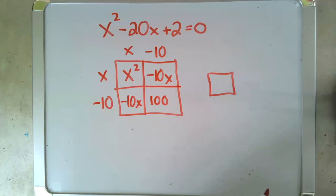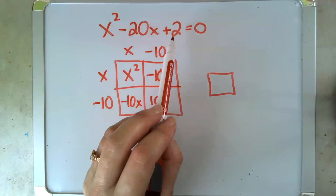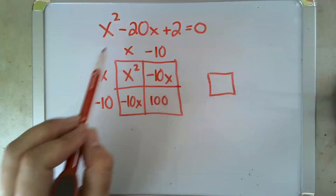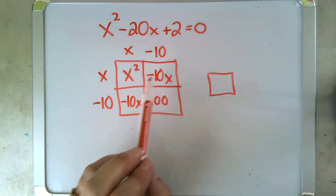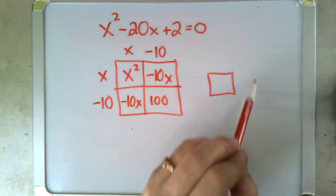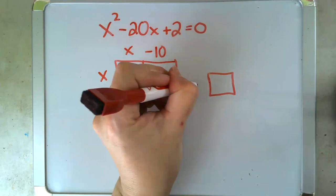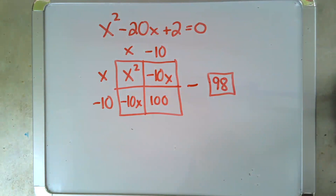But we've now changed our equation, right? We started with x squared minus 20x plus 2. When we completed the square, we ended up with x squared minus 20x plus 100. We use this to get back to 2. So how do we turn 100 into 2? That's right. We subtract 98 from it. And now we put the whole thing back together in its new form.